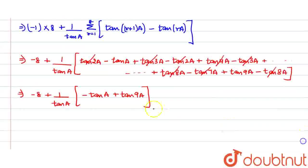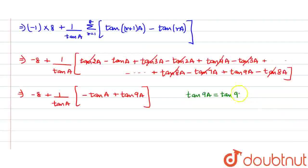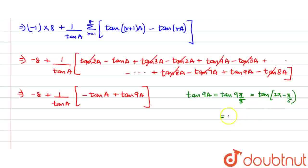I will calculate tan(9a) separately. tan(9a) equals tan(9 × π/5) = tan(9π/5). Now, 9π/5 can be written as tan(2π − π/5), because 10π/5 − π/5 = 9π/5. We know that tan(2π − θ) equals −tan(θ), so this will become −tan(π/5). Since π/5 is a, this becomes −tan(a). So, tan(9a) comes out to be −tan(a).